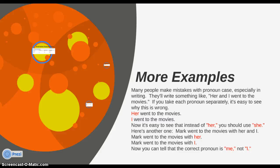A lot of people would say "her and I went to the movies." Even if somebody says this to you, you'll understand what they mean, but it really is wrong. You wouldn't say "her went to the movies," but you would say "I went to the movies." So instead of her, we need to say she. The correct sentence is "she and I went to the movies," because "her went to the movies" doesn't make any sense.